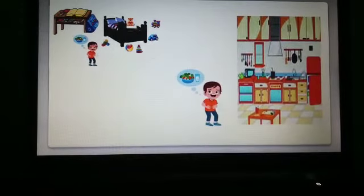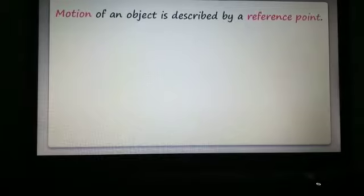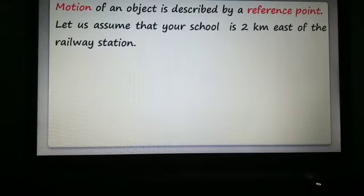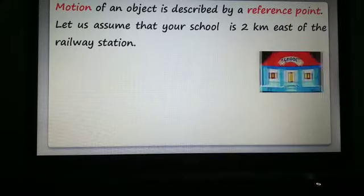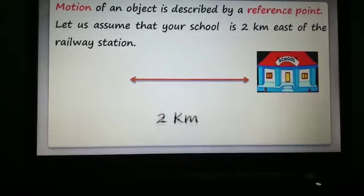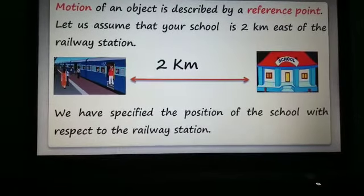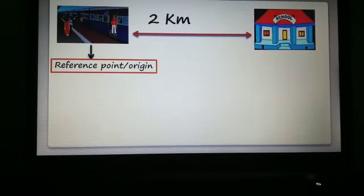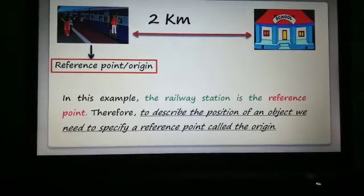The change in position of an object with respect to some point is called motion, and the point from which the position is changed is called the reference point. In this example, you move from the room to the kitchen, so your room is the reference point. Let's understand another example: your school is 2 km east of the railway station. Here we specified the position of the school with respect to the railway station, so the railway station is the reference point, also known as the origin.